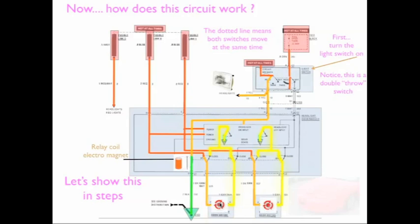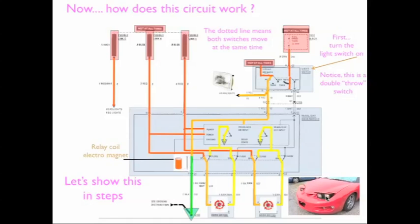So the motors are going to run now. Because the module sees the headlight-on signal, it closes these switches. The switched-on ground comes through here — it was previously stopped by an open switch, but now it is a closed switch so the ground continues, hits the motor, and the motor runs. The headlight doors are going to open. The same thing happens on the other side — the module closes, it comes down through a closed switch, and the headlight motors open.